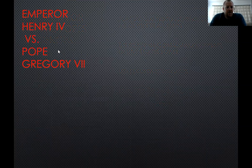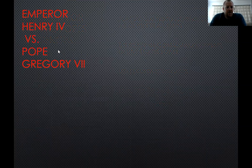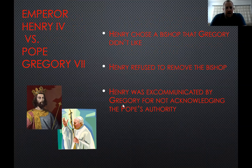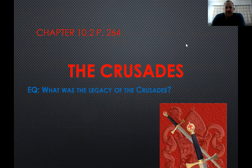Emperor Henry IV versus Pope Gregory VII — Henry chose a bishop that the Pope did not like, and Henry refused to move the bishop. So Henry was excommunicated by the Pope for not acknowledging the Pope's authority. This leads to the Compromise of 1122: the Pope and church had religious power, the king had political power. Fighting continues. And now this is where we get to Chapter 10, Section 2 — the Crusades.